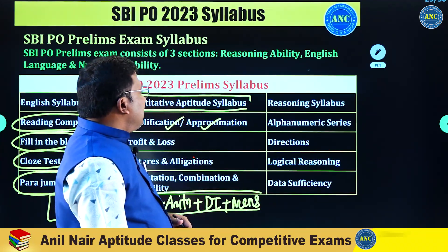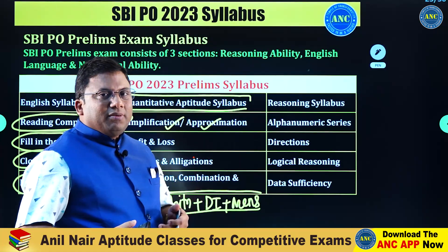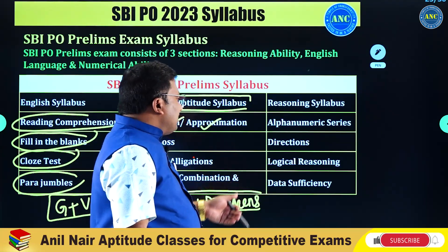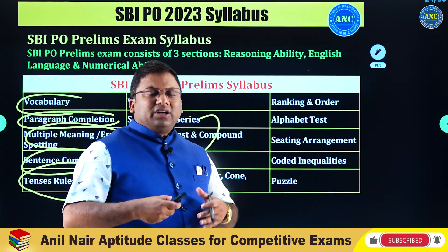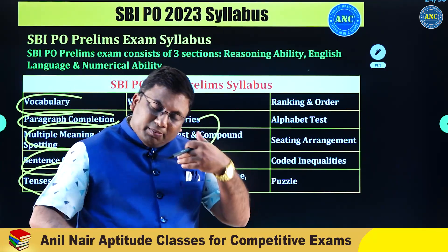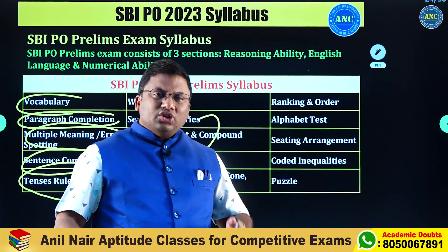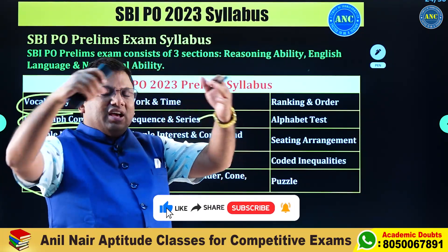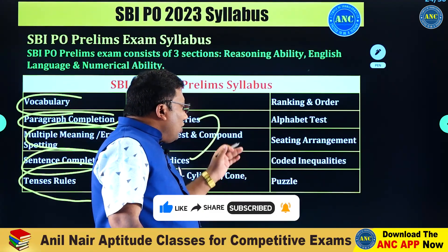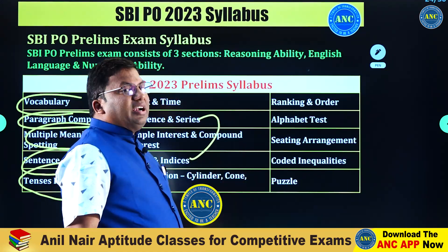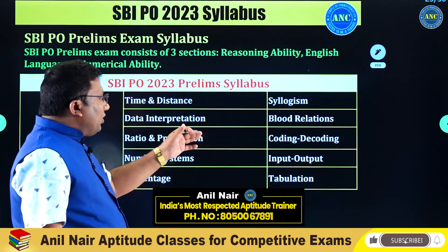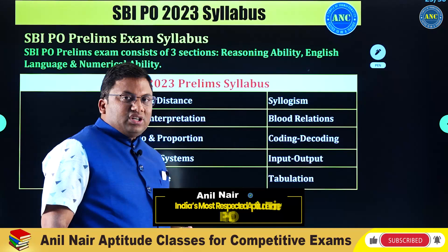Now let us see the reasoning syllabus. Reasoning, almost like every examination, but only the level of difficulty increases. Topics include: number series, coding series, data sufficiency, seating arrangement (linear, circular, rectangular, floor-based arrangements), coded inequalities, puzzle-related questions, alphabet test, ranking and order, input-output, and tabulation-related questions.